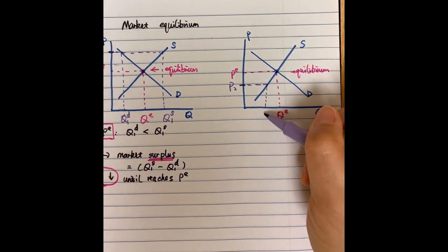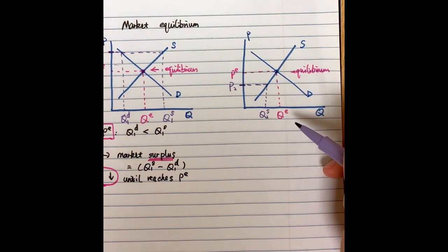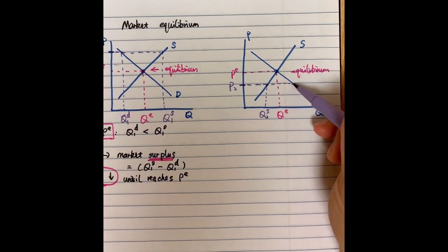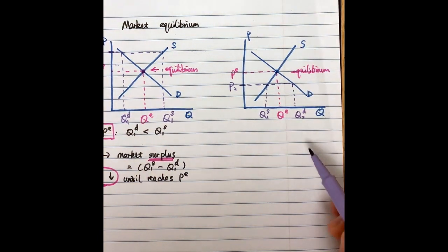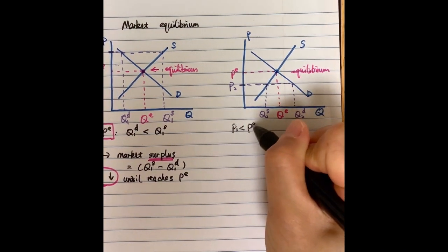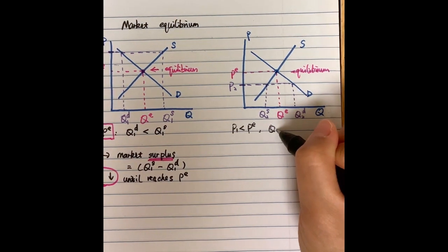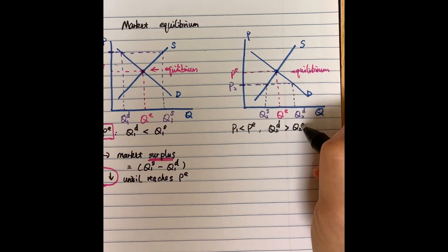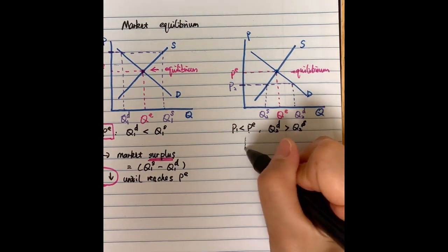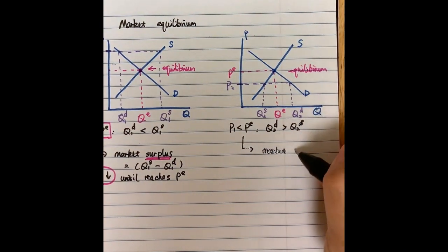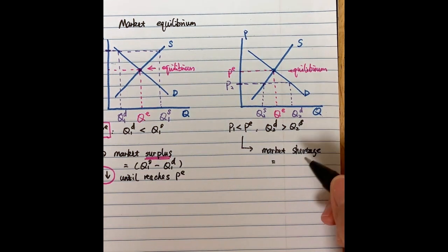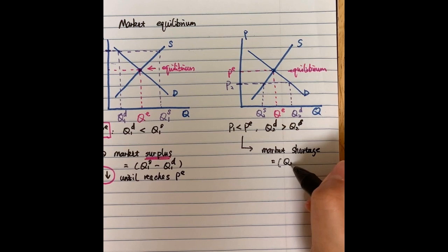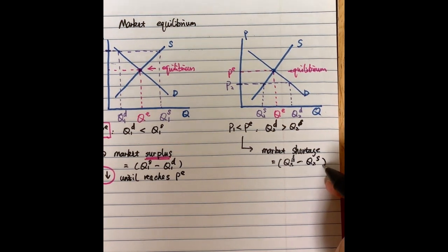At P2, sellers are reluctant to offer products, so the quantity supplied equals Q2^S. But from the consumer's perspective, the lower price means consumers would like to buy more products, increasing quantity demanded. When the price is smaller than the equilibrium price, quantity demanded is larger than quantity supplied, which results in a market shortage. The shortage quantity equals quantity demanded minus quantity supplied.